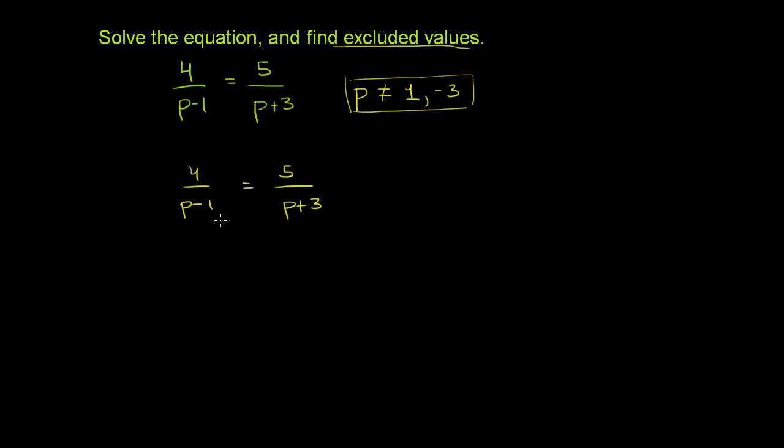To get the p minus 1 out of the denominator, we can multiply the left-hand side by p minus 1. But remember, this is an equation. If you want them to continue to be equal, anything you do to the left-hand side, you have to do to the right-hand side. So I'm multiplying by p minus 1.